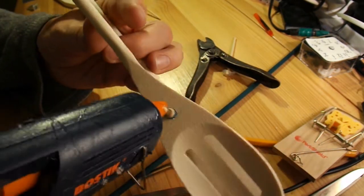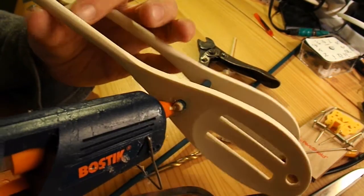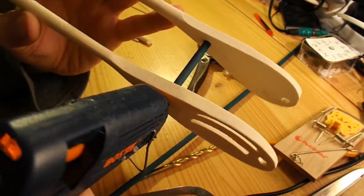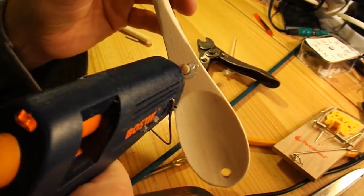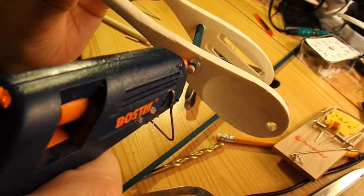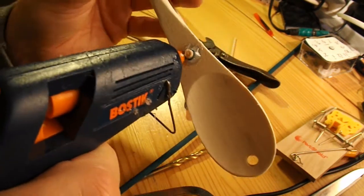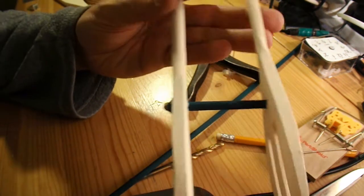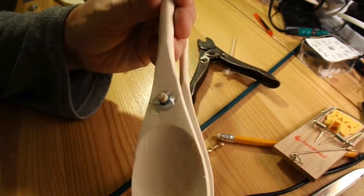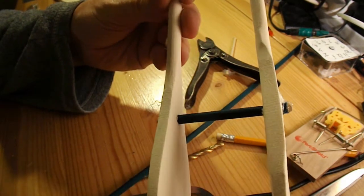Just hot gluing these cross members in place to give it a bit of strength. As this is all wood, I could have used wood glue, but I'm using hot glue for the speed.